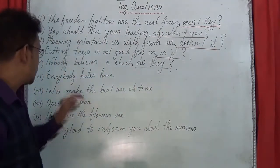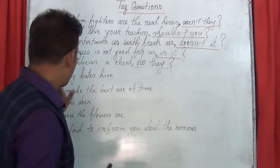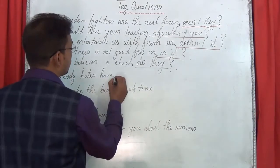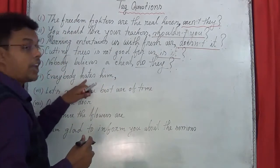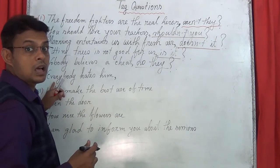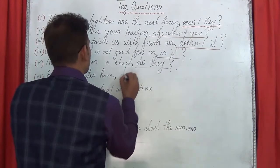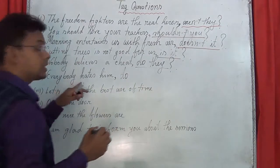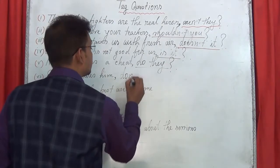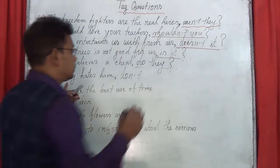Next: 'Everybody hates you.' The main verb 'hates' has an -s, so you would use 'does,' but 'everybody' — the pronoun is 'they,' so you have to use 'do.' The sentence is affirmative, so you have to use the negative form — 'don't.' The tag is: 'don't they?'